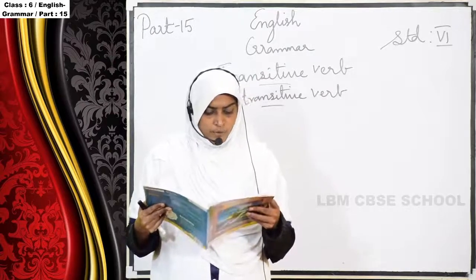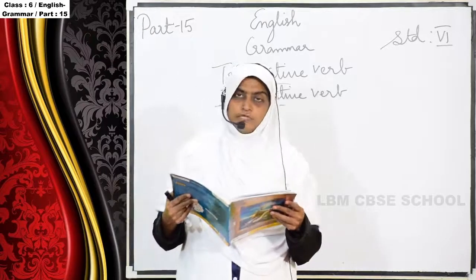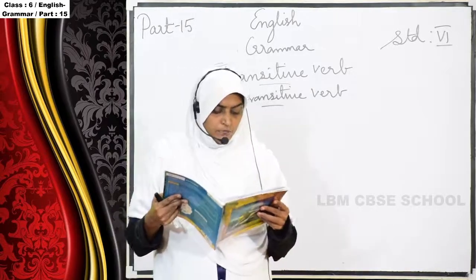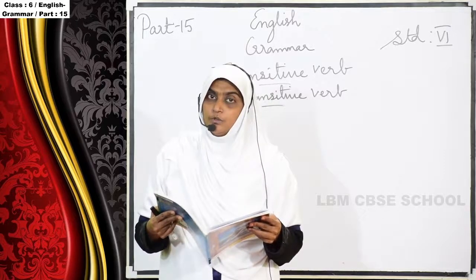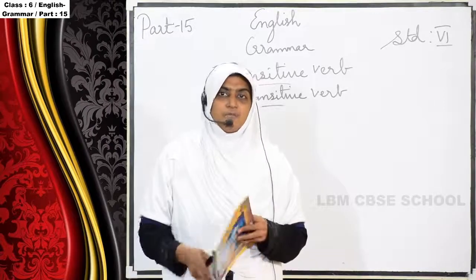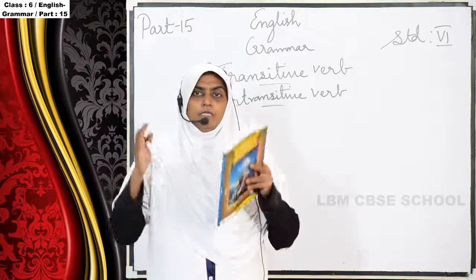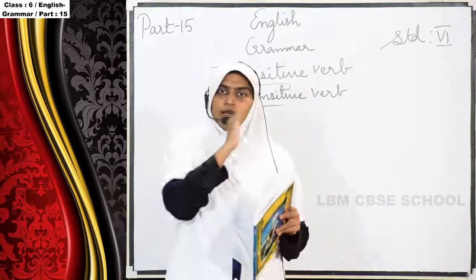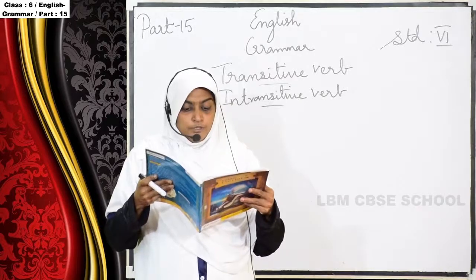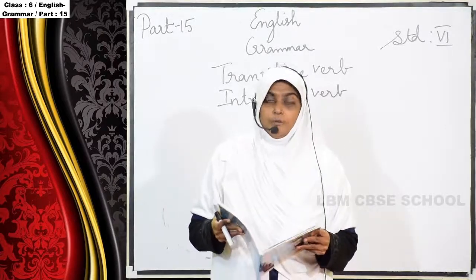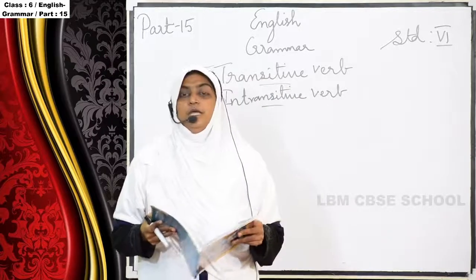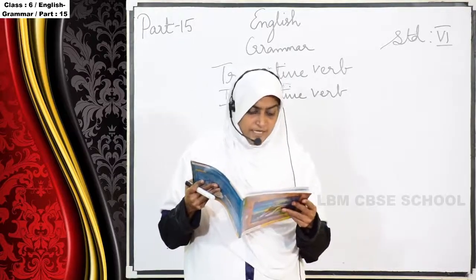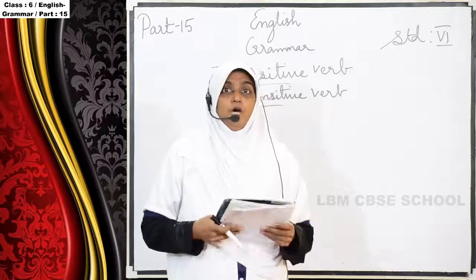So here now we are going to learn about what is transitive verbs and intransitive verbs. Already I taught you the definition. What is the definition? Verbs that take objects are called transitive verbs. In your sentence you have subject, verb, and object. The subject will pass on to the object — we call that transitive verbs. Verbs that do not take objects are called intransitive verbs. Some words do not take the object — that we call intransitive verbs. The verb will not pass on to the object.